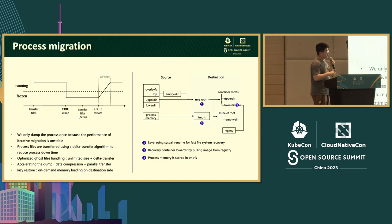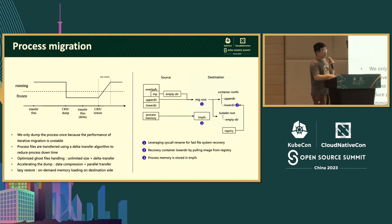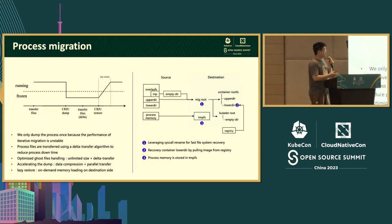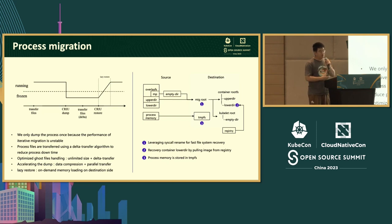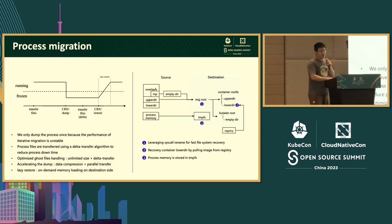On the right side are our filesystem restore operations on the destination node. We ensure that the directory receiving data and the directory used when starting the container are on the same filesystem, so we can use the rename syscall to quickly restore the filesystem without disk copy operations. The container image's lowerDir is pulled from the image registry rather than copied from the source node. For the process memory, we open a tmpfs on the destination node and transfer the source memory directly into local memory, so restore is from memory to memory and is very fast.